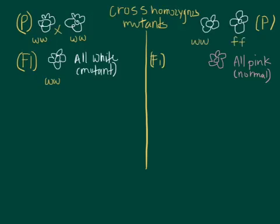Now let's take the right-hand side, the other possibility, where the same cross — where we took our two homozygous white flowers and crossed them together — gives back all pink offspring in the first generation, all normal offspring. The explanation for this result is that they are mutant in different genes. I drew two different genes, two different recessive homozygous genotypes. In the first flower, it's mutant in the W gene to give it the white color; in the other flower, it's mutant in the F gene to give it the white color. There could be two different genes that lead to the same phenotype.